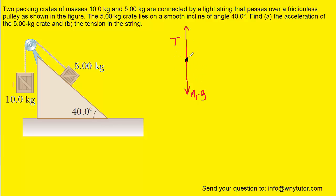That completes the free body diagram for the first block. The 5-kilogram block turns out to be a little more complicated. We represent it with a dot again, and draw an x-axis as well as a y-axis superimposed on that dot. The 5-kilogram block is attached to a rope pulling up on the block in the direction up the ramp. There's also a gravitational force acting downward, which we call M2 times G, as long as we label this block with a number 2.